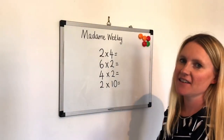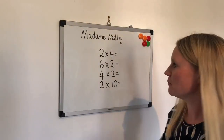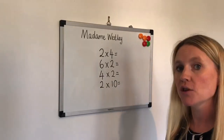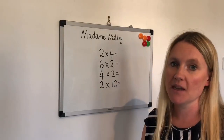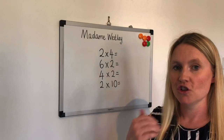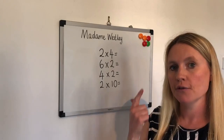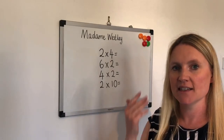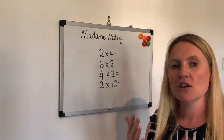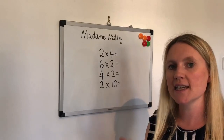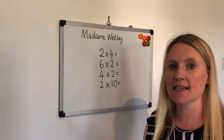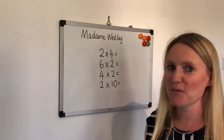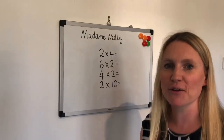Finally, we're going to look at our two times table. Before we start these questions and write the answers down, I want you to practise with me at home: 2, 4, 6, 8, 10, 12, 14, 16, 18, 20. Let's do it one more time, everybody nice and loud — I want to be able to hear you: 2, 4, 6, 8, 10, 12, 14, 16, 18, 20. Fantastic.